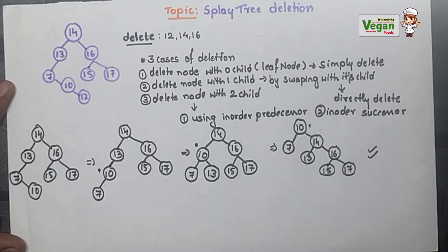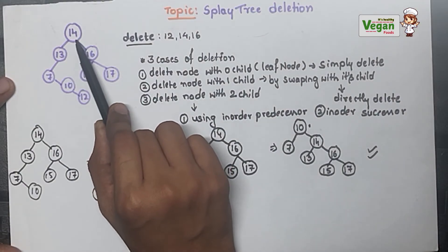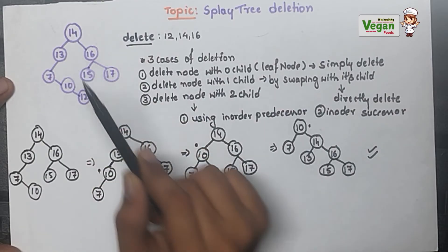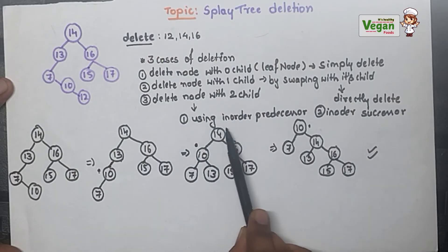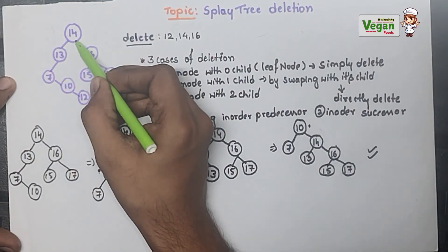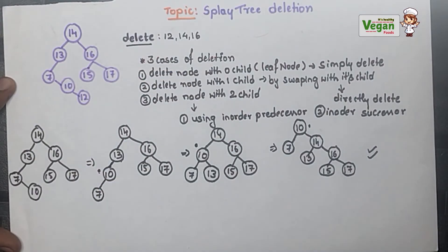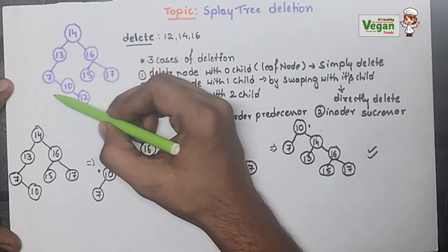Now I must delete 14. 14 is in the root node and it is having two children — 13 is one child and 16 is one child. To delete a node with two children, we can use in-order predecessor or in-order successor. In-order predecessor means you look at the left subtree of the node you want to delete. I must delete 14 so I look at the left side — this full portion will be the left subtree and the other full portion will be the right subtree.